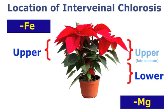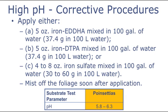Usually a full substrate test and/or tissue test is required to confirm a magnesium deficiency. If iron deficiencies do occur, first make sure that the substrate pH is confirmed to be too high. If confirmed, the three iron treatment options listed in the slide can be used for lowering the substrate pH. Apply the corrective action and then rinse the foliage after application. Retest the substrate pH to confirm that it's within the acceptable range between 5.8 and 6.3.